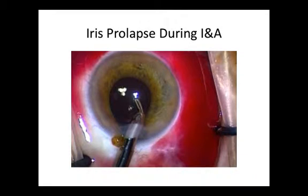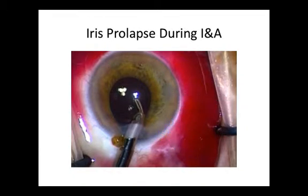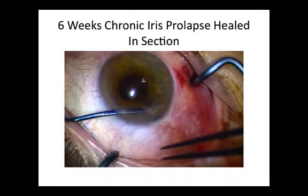However, if prolapse such as this has occurred early on, it is always better to stop, remove the instrument, replace the iris gently, and then either close the section and re-utilize another section, or possibly use iris retractors to tighten the iris and pull it posterior to the corneal section.